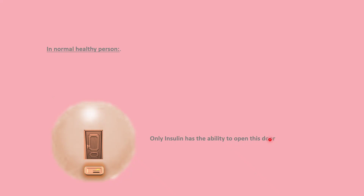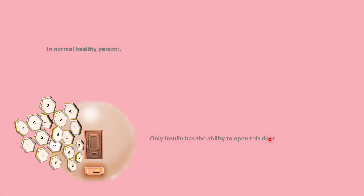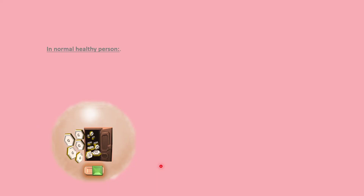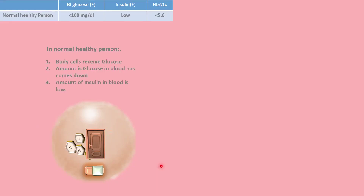Hypothetically, after meals, glucose enters the blood. The pancreas makes insulin. Insulin, and only insulin in the world, has the ability to bind to this receptor and open the door. Once it binds to the receptor, the door in the cell opens up and the sugar enters the cell. After some time, the effect of insulin wanes. In this process, three things have taken place: body cells have received glucose, the level of glucose in the blood falls down, and the amount of insulin in the blood also falls.